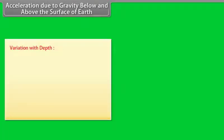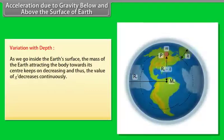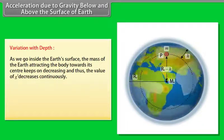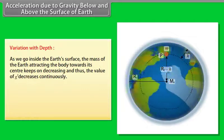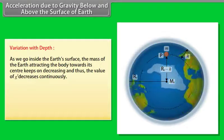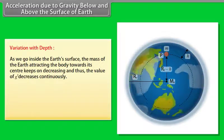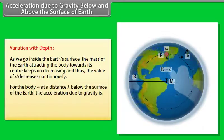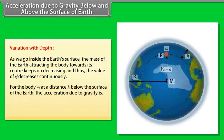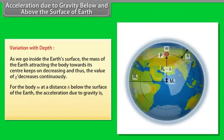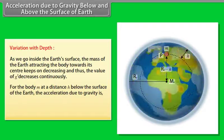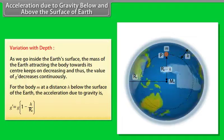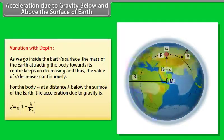Variation with depth: as we go inside the earth's surface, the mass of the earth attracting the body towards its center keeps on decreasing, and thus the value of g decreases continuously. For a body at a depth h below the surface of the earth, the acceleration due to gravity is: g' = g × (1 - h/Re).